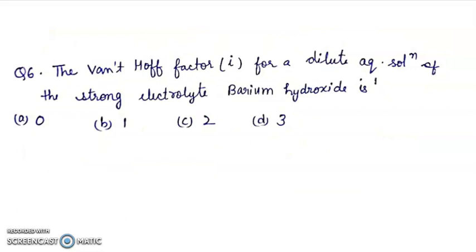Question 6: Van't Hoff factor i for a dilute aqueous solution of strong electrolyte barium hydroxide. Barium hydroxide is Ba(OH)2, so total three ions are there.